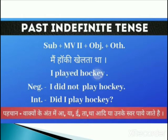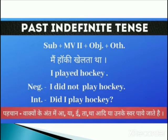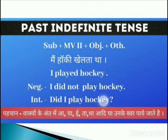Recognition in English: Subject + second form of the verb + object + other (predicate). Affirmative: I played hockey. Negative: I did not play hockey. When making a negative sentence, use the first form of the verb with did not. Did not ke saath hum first form lagayenge: I did not play hockey. Interrogative: Did I play hockey? Did bahar aa jaega.